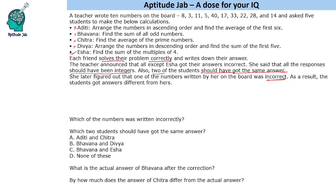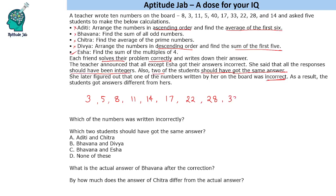Let us write these numbers in ascending order for simplicity. The numbers in ascending order are: 3, 5, 8, 11, 14, 17, 22, 28, 33, and 40.